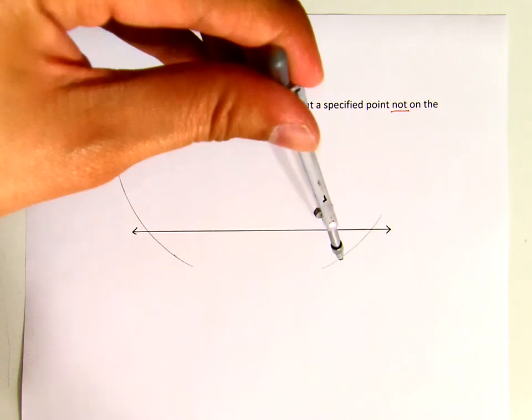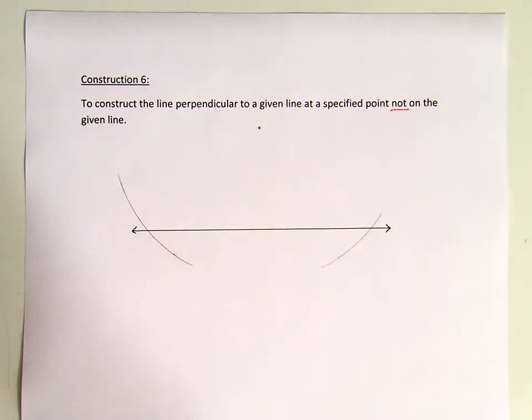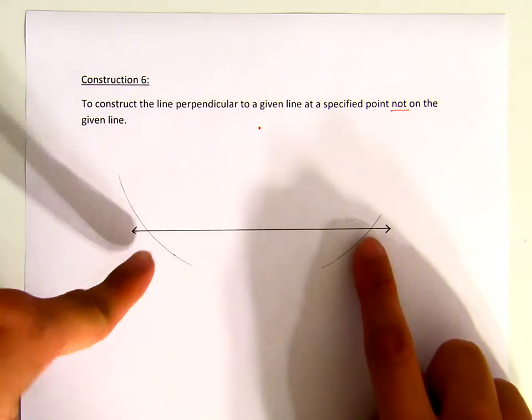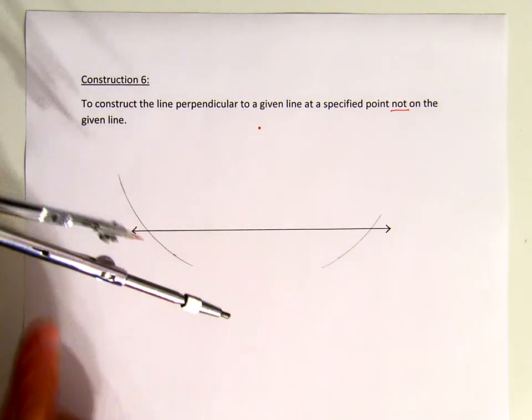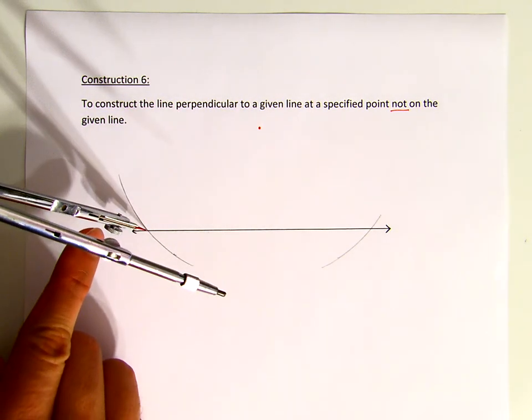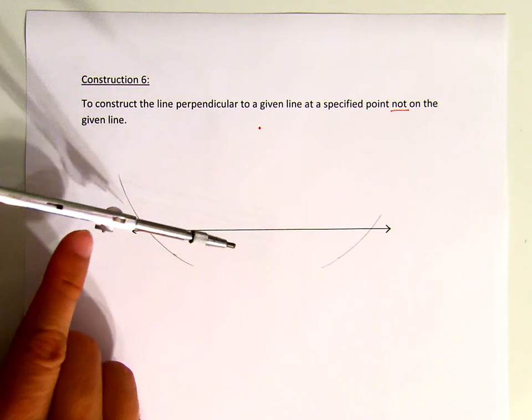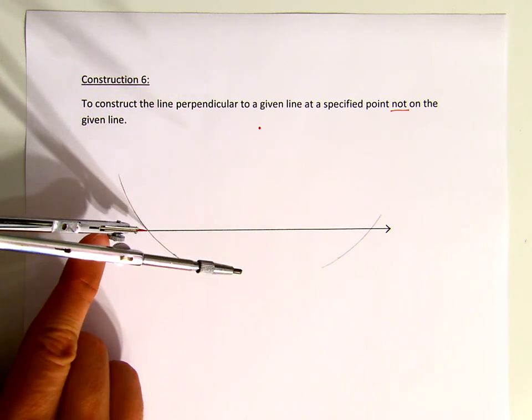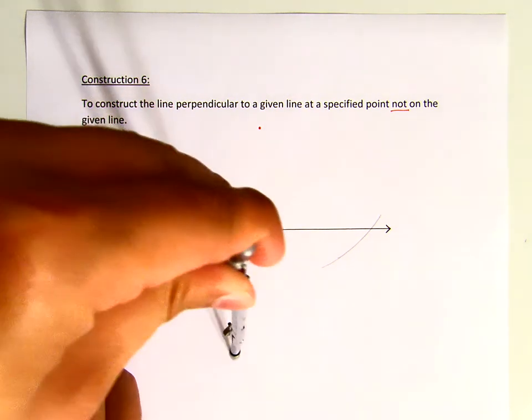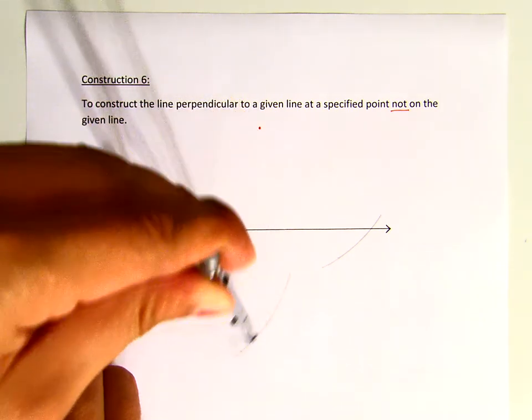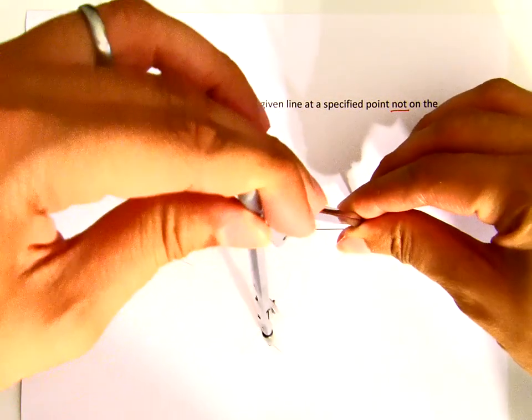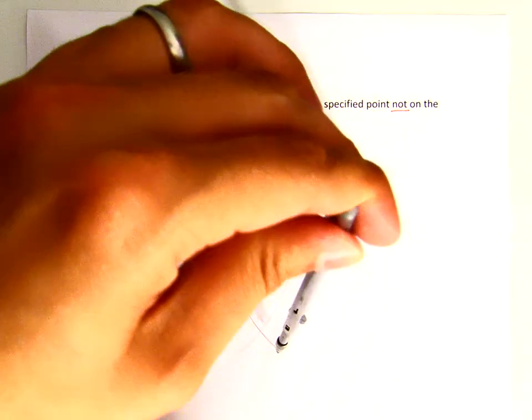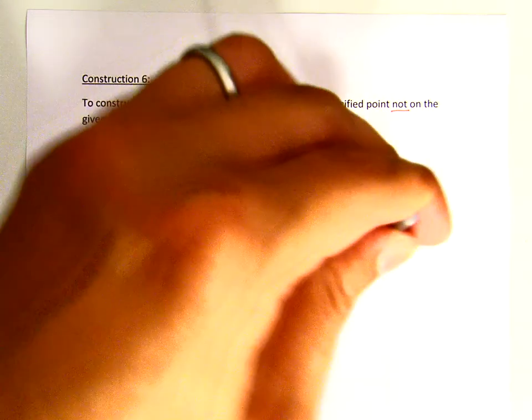Now I will use the same opening - we don't need to change the opening of the compass. I put my pivot leg at this intersection here, swipe it here, and from this point likewise. Do you see that intersection?